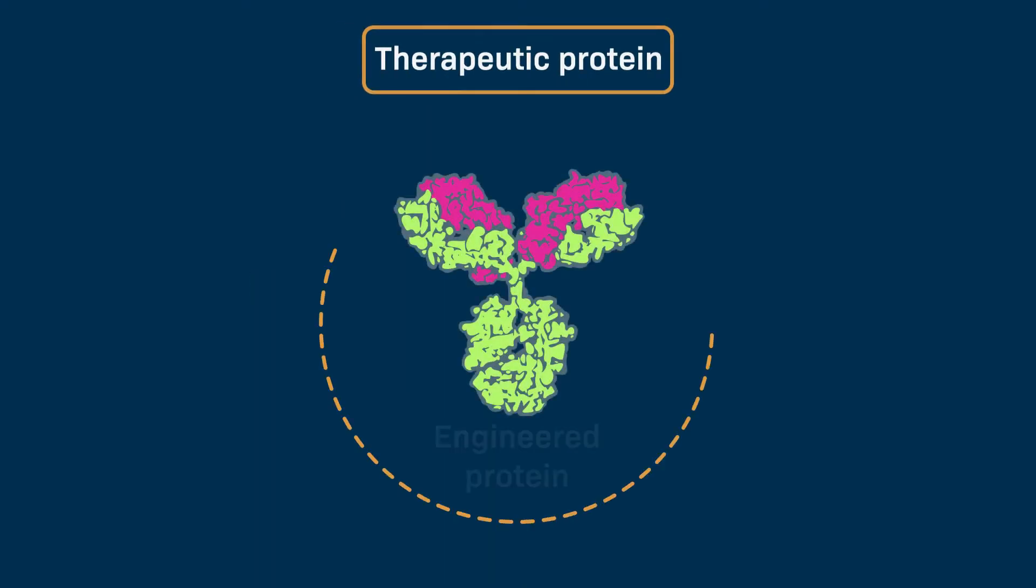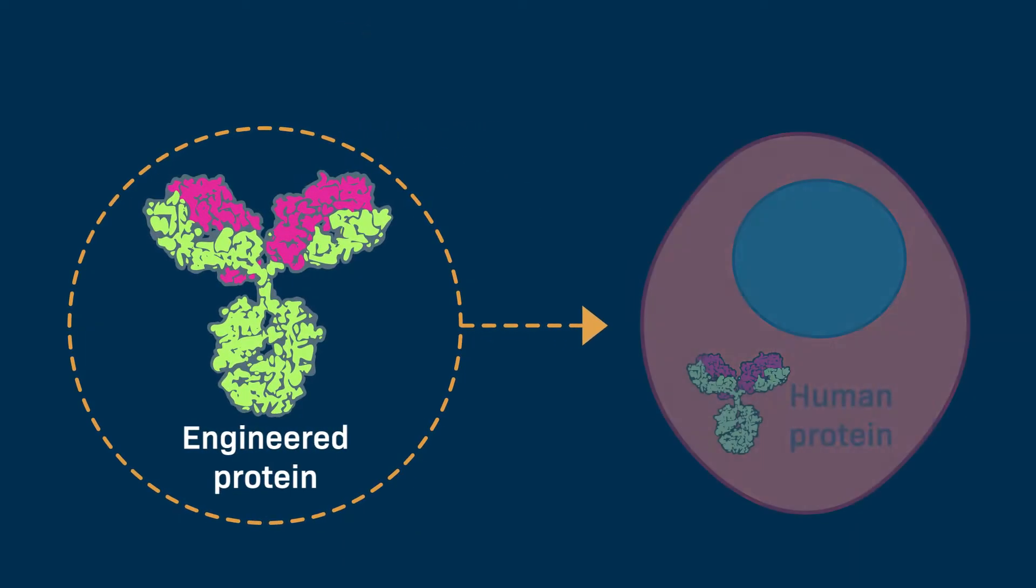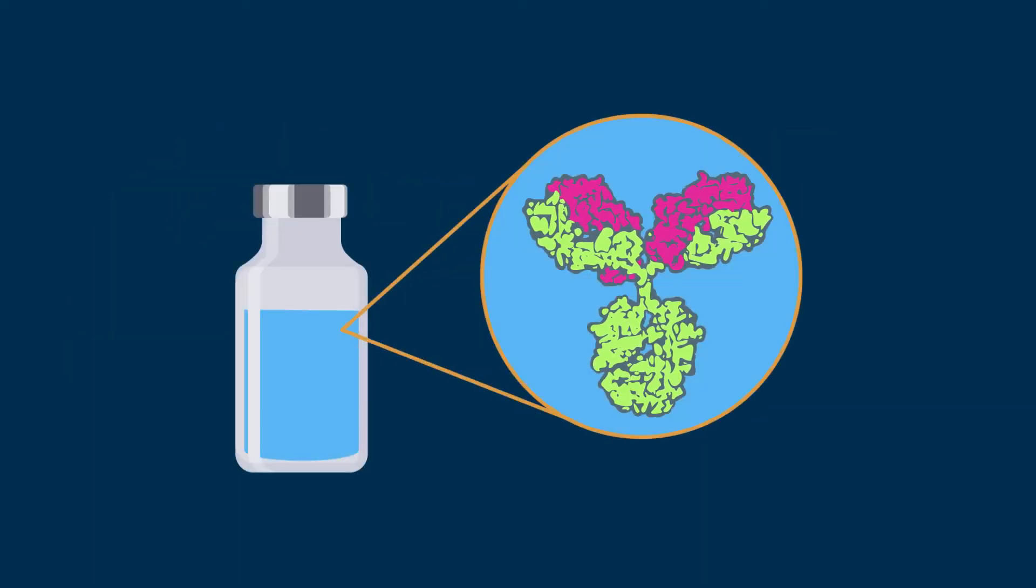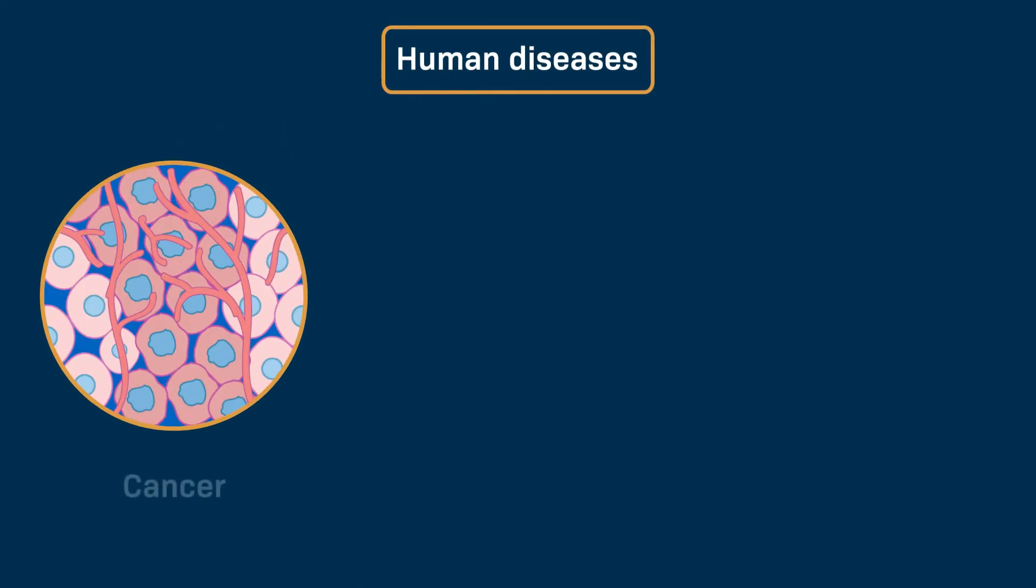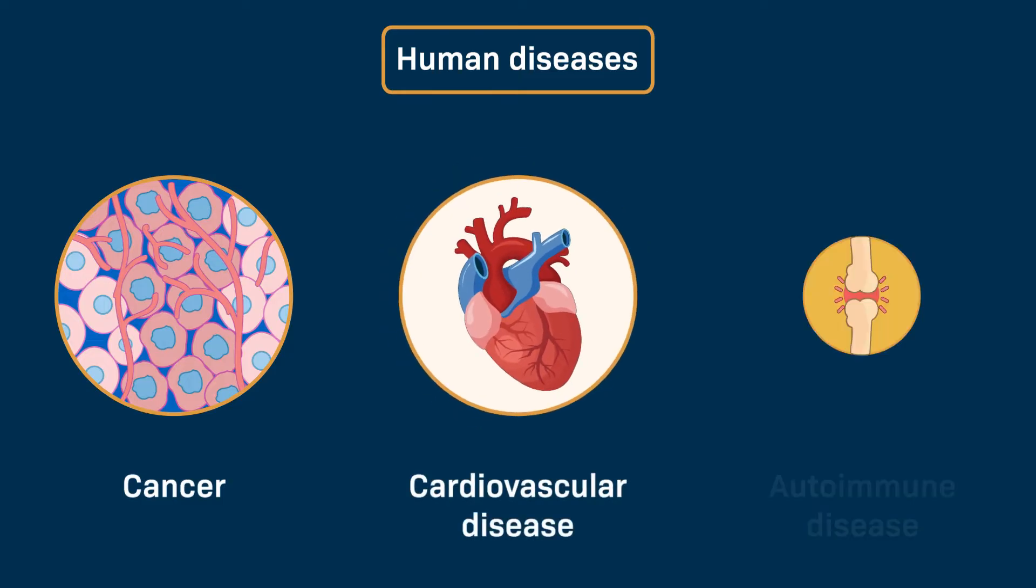Therapeutic proteins are engineered versions of naturally occurring human proteins that can be used as medicines to treat various diseases, including cancer, cardiovascular disease, and autoimmune disease.